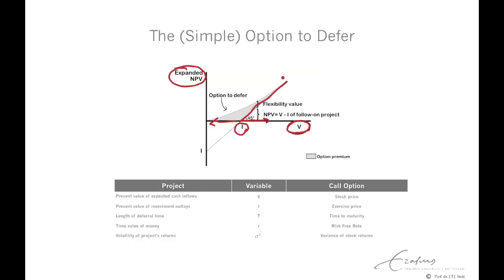The payoff is the value of the oil reserve minus the investment outlay to put down the platform. However, if in one year the project value declines below the investment outlay, making the investment would create negative value. But since we are not committed — we have an option — we decide not to invest. So the value of the option is truncated at zero.